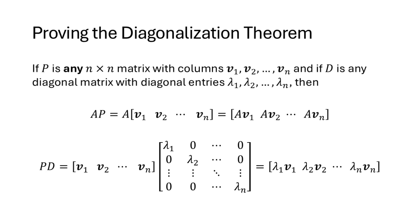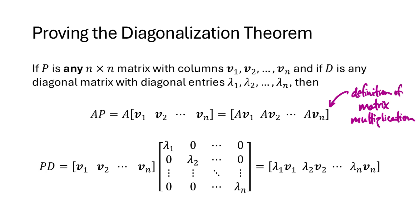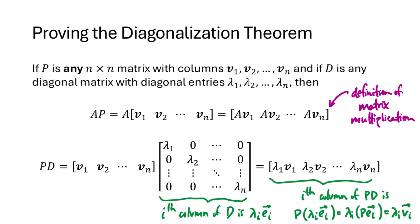Here is the key observation for the proof. If P is any n by n matrix whose columns are v1 through vn, and D is any diagonal matrix with diagonal entries λ1 through λn, then multiplying A times P gives the matrix whose columns are Av1, Av2, and so on — by the definition of matrix multiplication. When we multiply P times D, the result is each column of P scaled by the corresponding diagonal entry of D. This is because the i-th column of D is λi times ei, so the i-th column of PD is λi·vi.